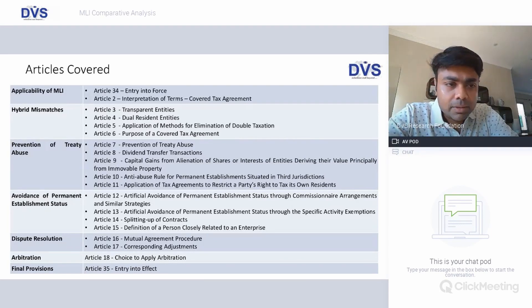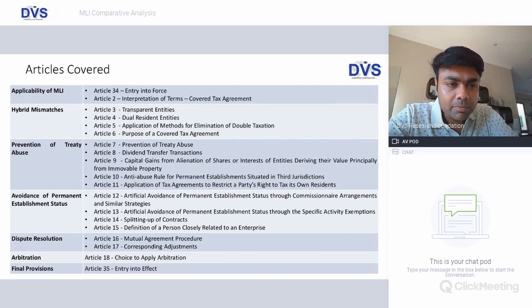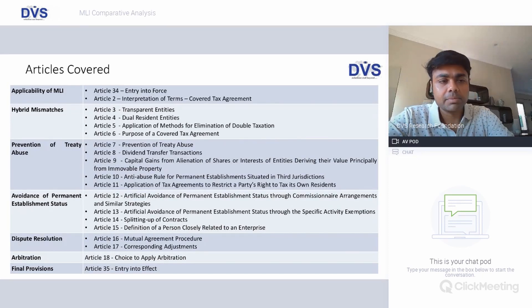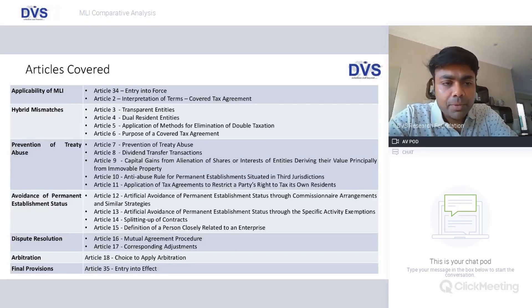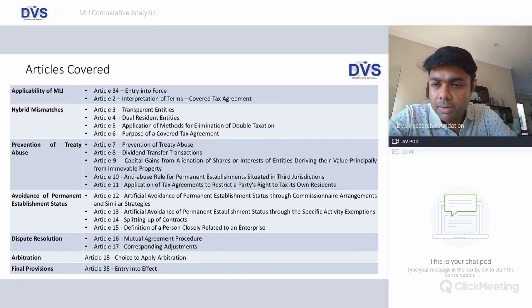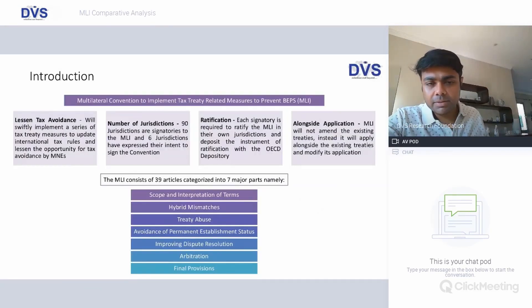As far as MLI is concerned, the entire scheme of provisions is split into seven categories: applicability, hybrid mismatches, prevention of treaty abuse, avoidance of permanent establishment status, dispute resolution, arbitration, and final provisions. These seven categories are comprised in 35 articles.